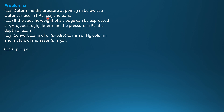The specific gravity of seawater ranges from 1.025 to 1.03. If not specified in the problem, use the maximum specific gravity of 1.03. Therefore, the specific weight of seawater is 1.03 times the specific weight of water, which is 9.81 kilonewtons per cubic meter. The depth is 3 meters.